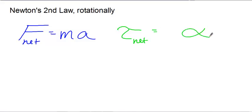All right, Newton's second law rotationally. So we know Newton's second law linearly is that Fnet equals ma. Let's talk about our rotational analogs. Our rotational analog of force is torque, so we can say not net force but net torque. Our rotational analog of acceleration is angular acceleration, alpha.